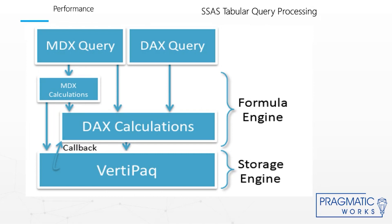Tabular models can be queried using both MDX and DAX queries. The diagram explains the underlying query processing architecture of Analysis Services when running in tabular mode. DAX queries can reference DAX calculations that reside in the model, in the session, or in the defined clause of the DAX query. PowerView reports generate DAX queries to gather the data they visualize. MDX queries can reference MDX calculations either in the session scope or in the with clause of the MDX query. MDX calculations can also reference DAX calculations, but the reverse is not true. MDX queries can directly refer to DAX calculations embedded in the model, and an MDX statement can also define new DAX calculations on the session scope or in the with clause of the MDX query.